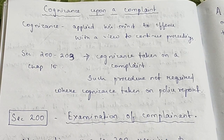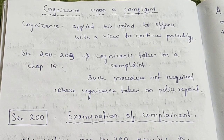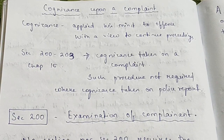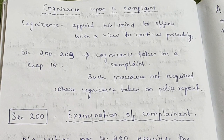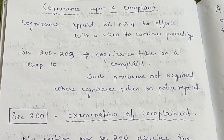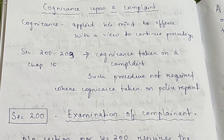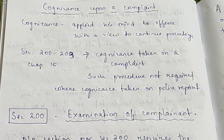Hello everyone, today we are going to discuss the process when a magistrate takes cognizance upon a complaint. So what is cognizance? Cognizance is when the magistrate applies his judicial mind to the offense with a view to continue the proceedings.